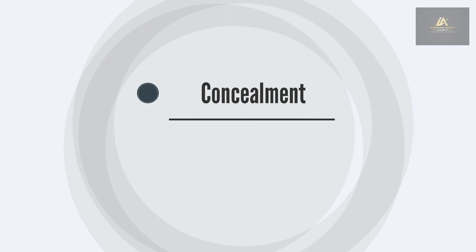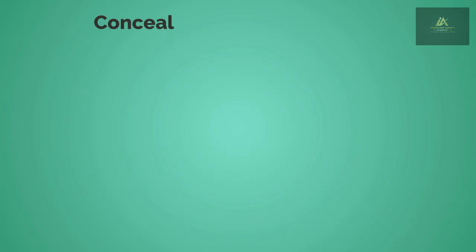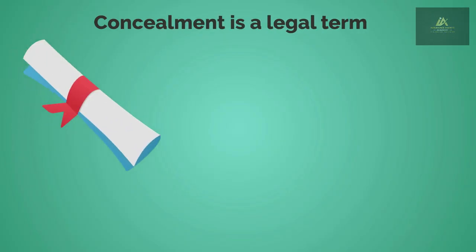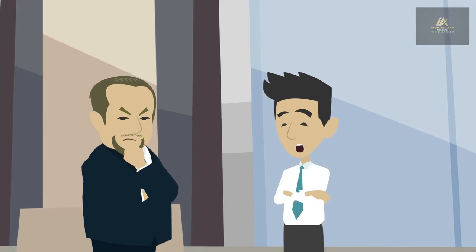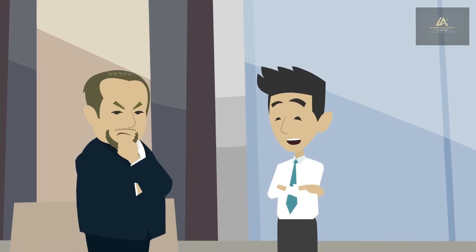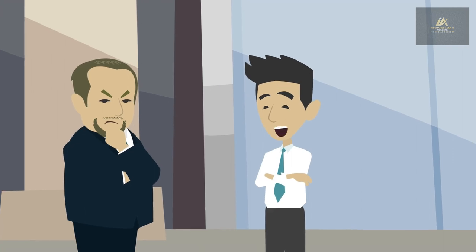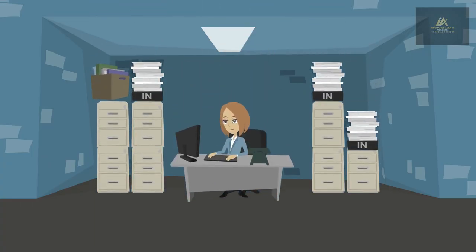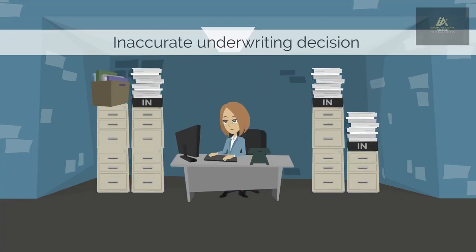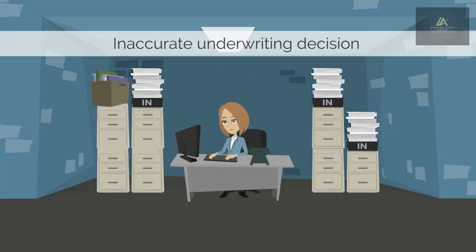Concealment: concealment is a legal term for the intentional withholding of information which is crucial in making a decision. With insurance, concealment is a withholding of information by the applicant that results in an inaccurate underwriting decision and can void the policy.